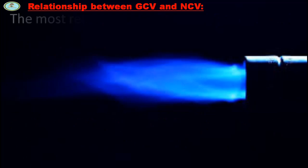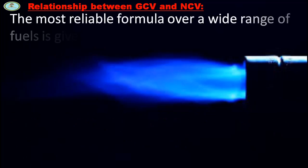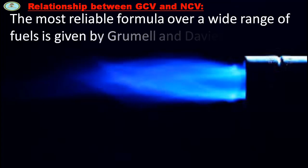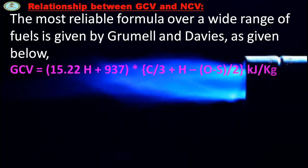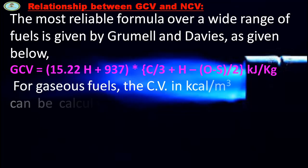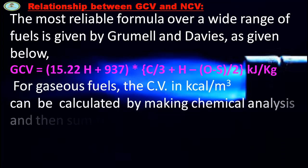The most reliable formula over a wide range of fuels is given by Gourmel and Dairies: GCV = 15.22H + 937 × (C/3 + H − O − S/2) kJ per kg. For gaseous fuels, the CV in kcal per m³ can be calculated by making a chemical analysis and then summing up the heat evolved by the combustible constituents when burnt separately.